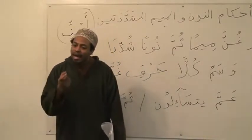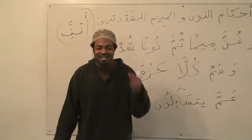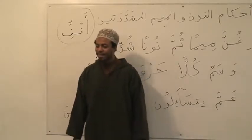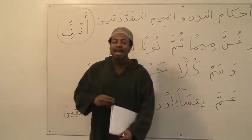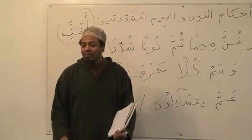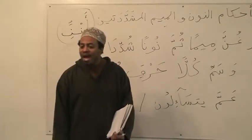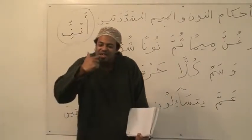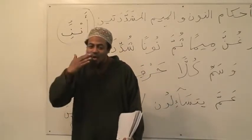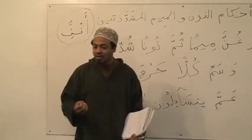أَمَّا — the meem is the type of sound that you cannot pronounce it clearly without pressing your lips together. أَمَّا — now don't do it so hard because if you do it too hard you won't get a sound. أَمَّا — but it has to be pressed متوسطا so that it can vibrate. The sound is vibrating on that, and that ghunna is catching it and that's where that sound resonates.